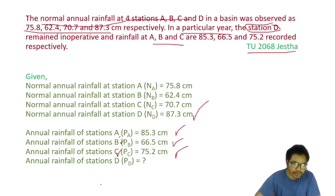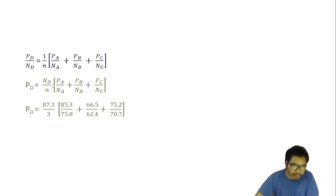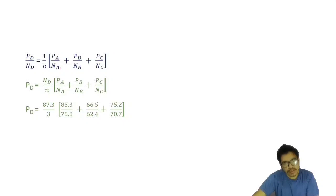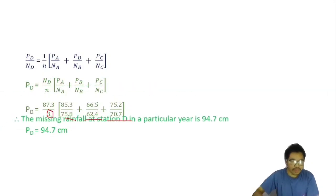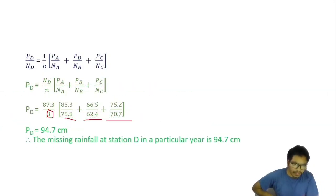Using the same normal ratio method formula: P_D / N_D = (1/n) × (P_A / N_A + P_B / N_B + P_C / N_C), with n = 3. Substituting all the given values, we get P_D = 94.7 cm. The missing rainfall at station D in that particular year is 94.7 cm.